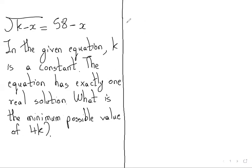So here first we'll write this: root k minus x is equal to 58 minus x. This is given to us. They have said that this is having exactly one real solution. So for one real solution, b square minus 4ac should be zero. So first we need to put it in that form.